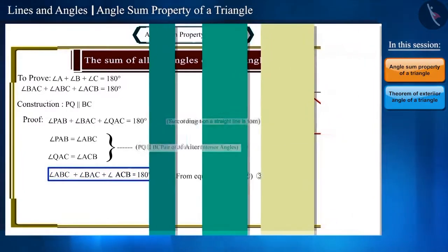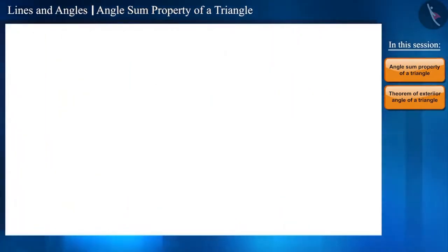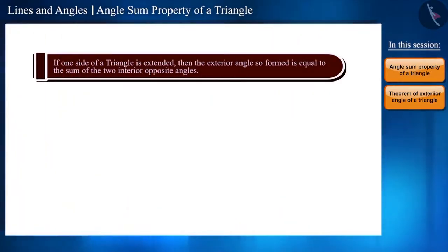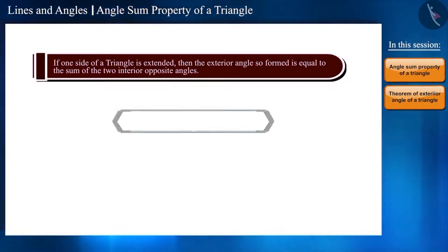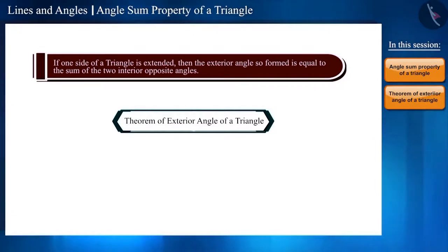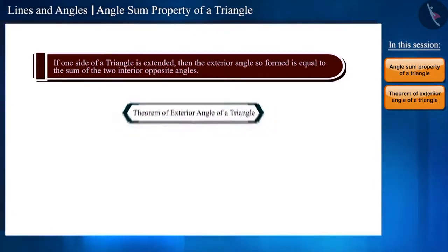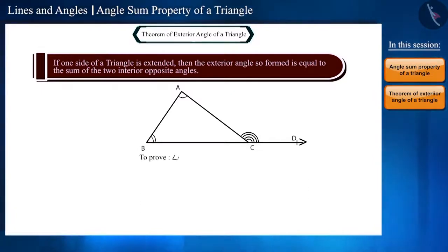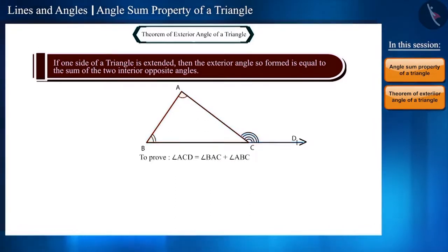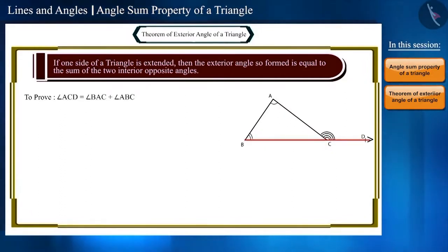Let us now move to the second theorem. This theorem states that if one side of a triangle is extended, then the exterior angle so formed is equal to the sum of the two interior opposite angles. This is also called the theorem of exterior angle of a triangle. So let's take triangle ABC again and extend side BC to point D. We have to prove that the exterior angle ACD equals angle BAC plus angle ABC.